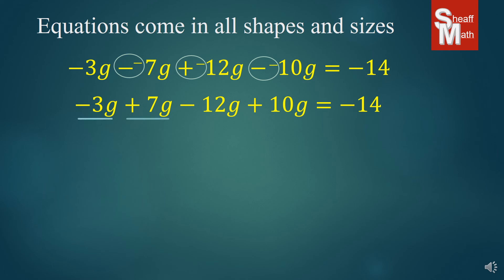At this point now you can add the like terms. Negative 3 plus 7 is 4, 4 minus 12 is negative 8, negative 8 plus 10 is 2. So we have 2g equals negative 14.